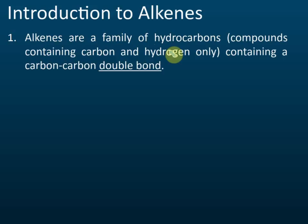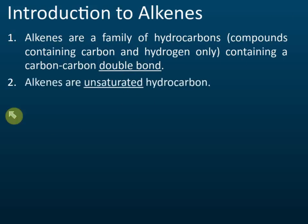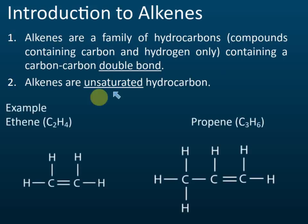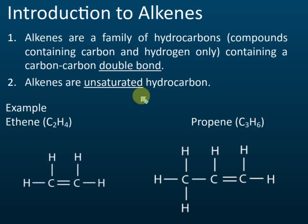Alkenes have a carbon-carbon double bond. Because of this double bond, alkenes are unsaturated hydrocarbons. For example, ethene and propene both have this double bond — as long as a compound has a double bond, it is unsaturated.